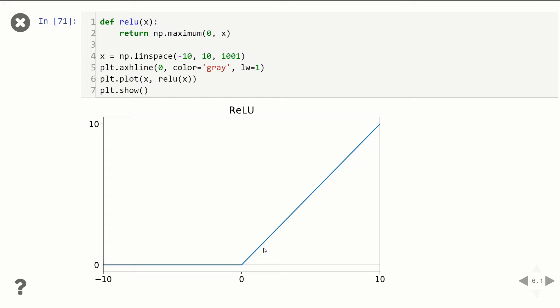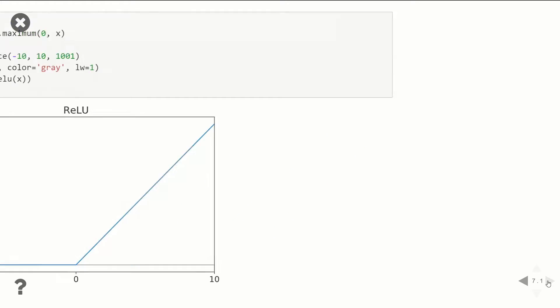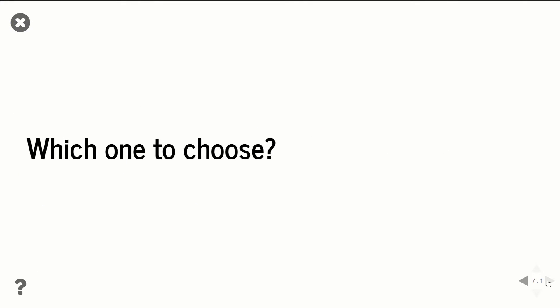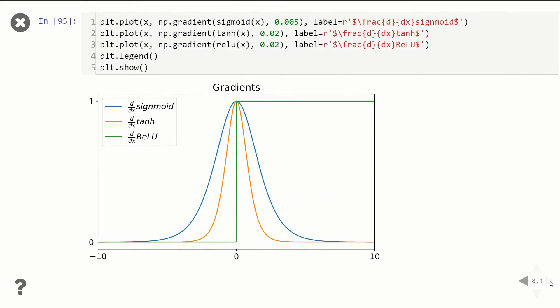So what I mean by that is let me jump over and show you a plot of all the gradients. This has a big impact on why we choose ReLU over the other ones. Here you can see a plot of the gradients of all three activation functions. Sigmoid in blue, tanh in orange, and ReLU in green.